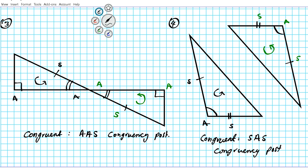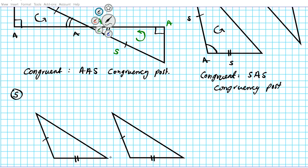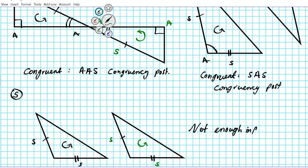Let's look at number five. We have two triangles and the orientation is counterclockwise. We have side and a side — SS. Is SS sufficient to show congruency? The answer is no. We do not have enough information. We cannot conclude that these two triangles are congruent based on the information we have.